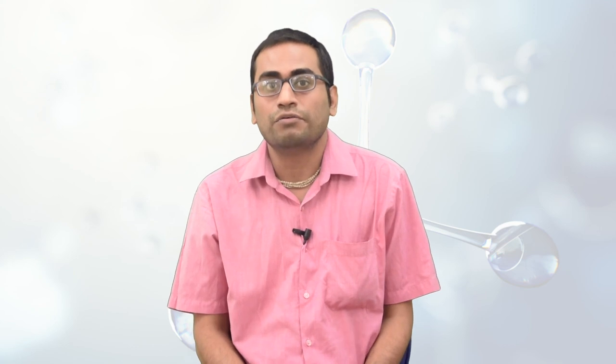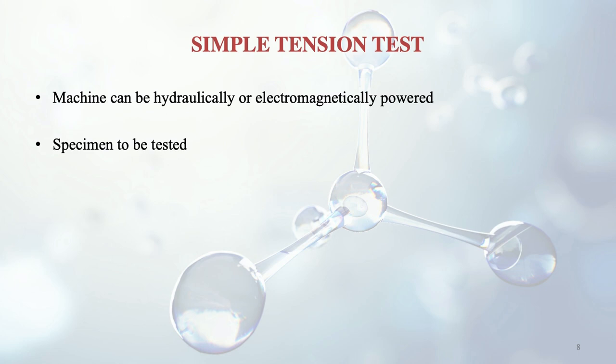The first test to discuss is the simple tension test. Requirements for testing include: a material testing laboratory, the ASTM D638 protocol, and a simple tension testing machine or universal testing machine (UTM), which can be hydraulically powered through a fluid or electromagnetically powered through electric current. A specimen must also be prepared for testing.